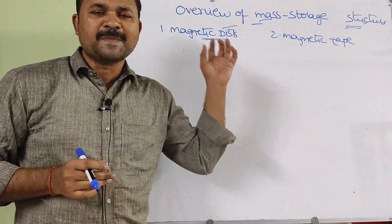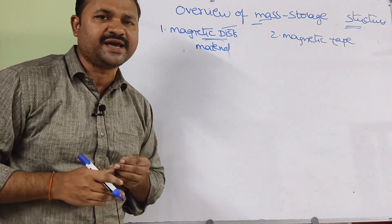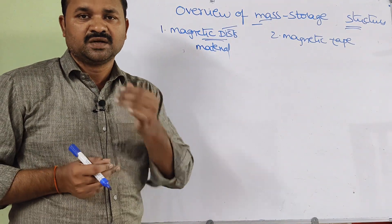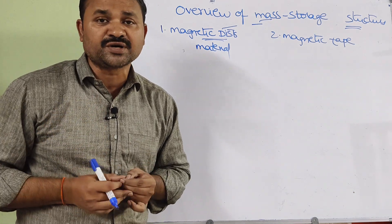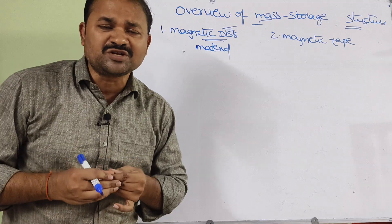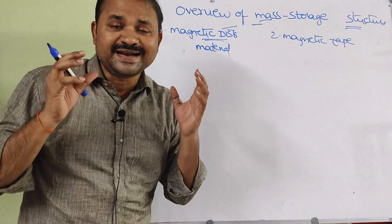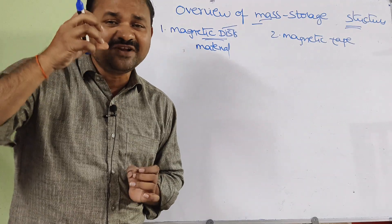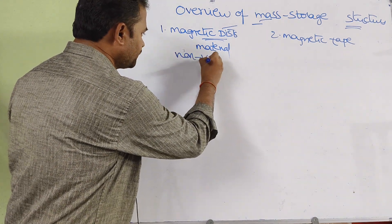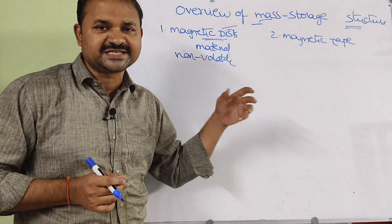The magnetic disk is coated with magnetic material, which is why it is also called a hard disk. The hard disk is mainly useful for storing large amounts of data — that is, a bulky amount of data. The hard disk stores data permanently. When we switch off the computer, the contents of the hard disk won't be lost; they reside permanently. That is why we call the hard disk non-volatile memory.